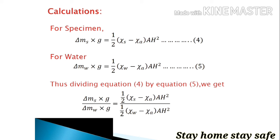And you can write equation as Δm_s times g equals one-half times (χ_s minus χ_A) times AH squared, as equation number 4.